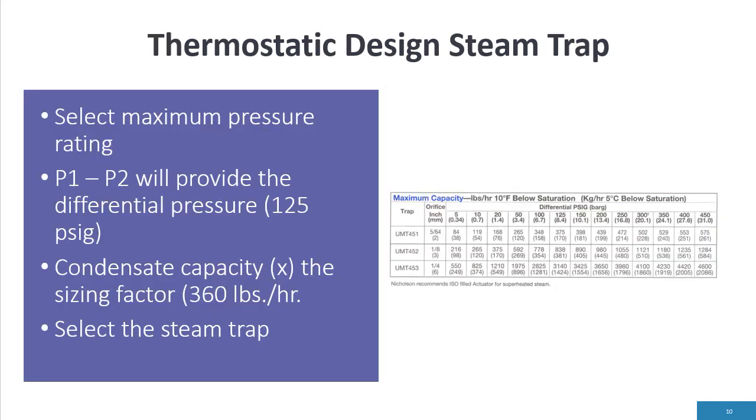If I come down to my sizing chart, the maximum pressure rating we said was 150 psi. All these steam traps here have a maximum pressure of 450 psi, so it's not as prevalent in the mechanical design steam traps. I come here to 125 psi differential, find something greater than 360 pounds per hour. I see I have a steam trap here, 838 pounds per hour, so it'd be a model 452. And then I made my selection of my steam trap.